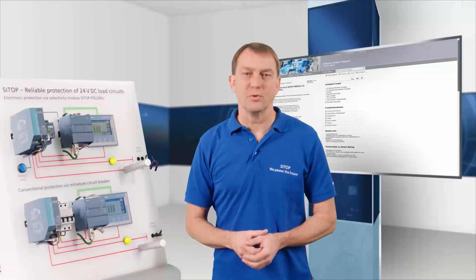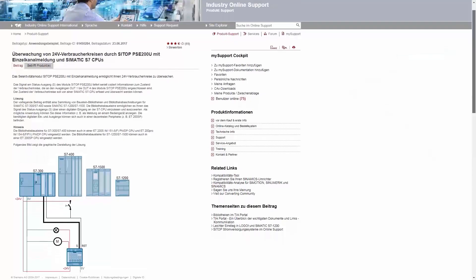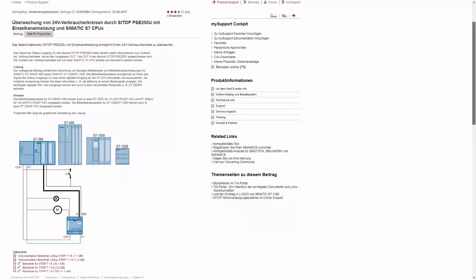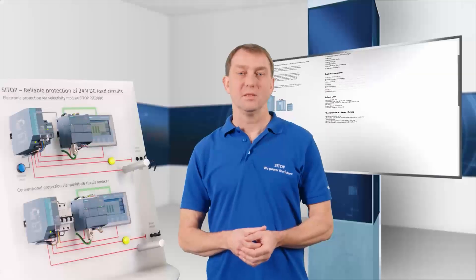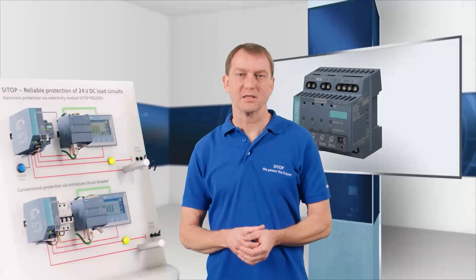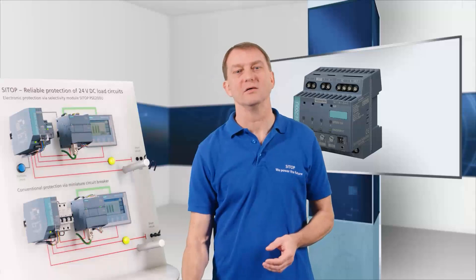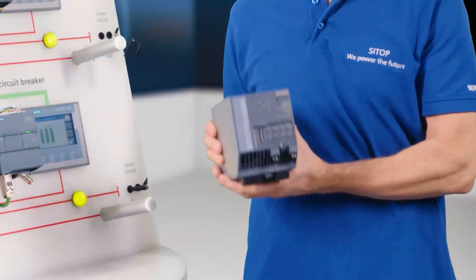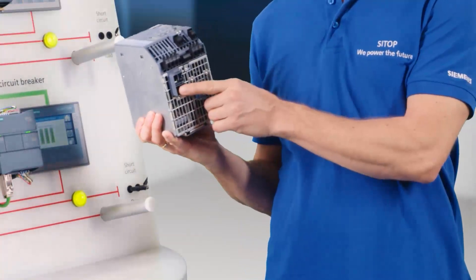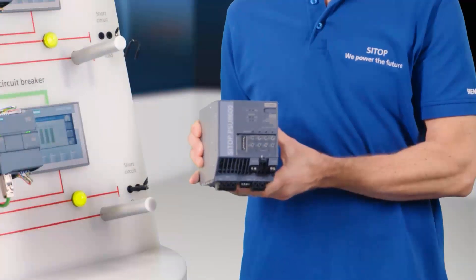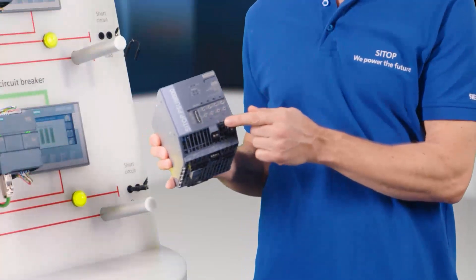An application example illustrating single channel monitoring with various SIMATIC S7 controllers can be found in the Siemens Industry Online Support system. In addition to using a power supply with a Selectivity module, CTAB also offers the PSU 8600 modular power supply system with PROFINET communication and engineering in the TIA Portal, plus integrated selective protection.